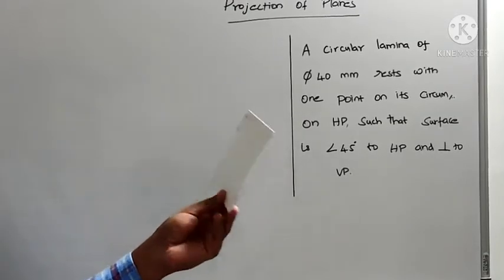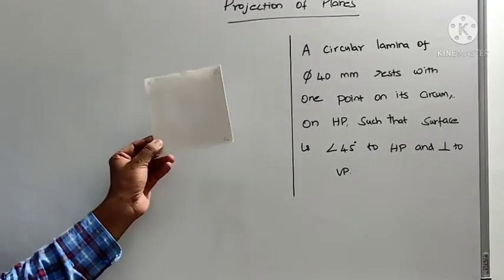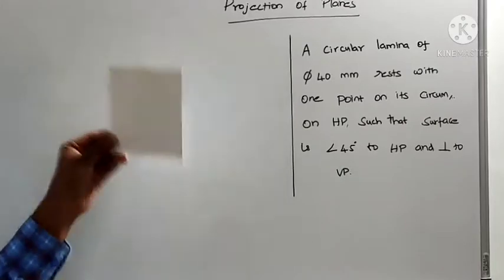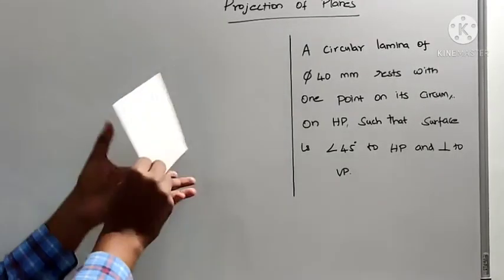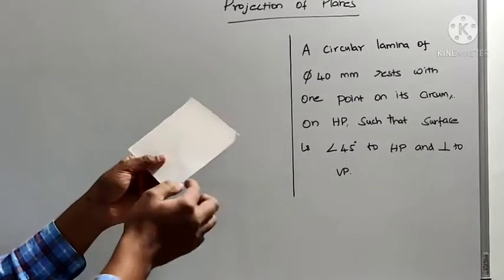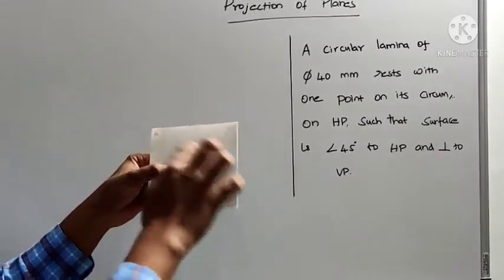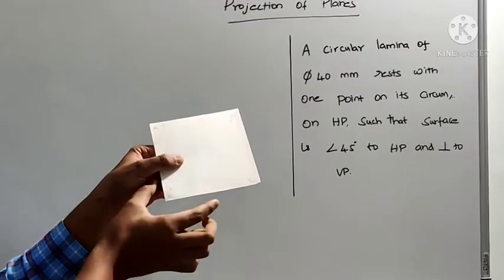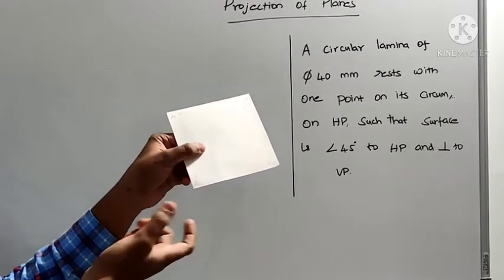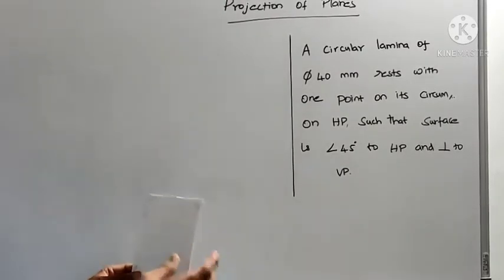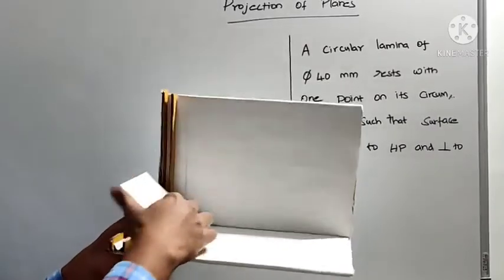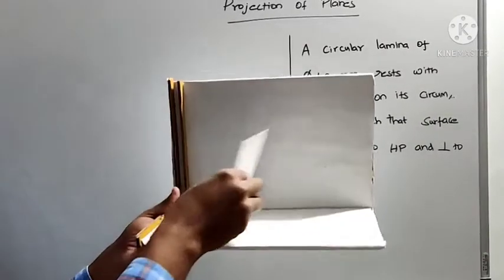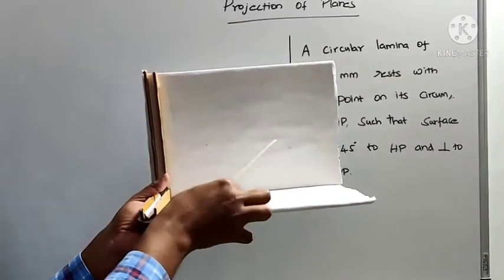For example, this is a square lamina, or we can call it a square plane. For this particular square plane, this is called the surface, and these four are all edges. The intersection of two edges are nothing but the corners. So when they say a surface is inclined at 45 degrees, it means the whole surface should be inclined at 45 degrees with HP.